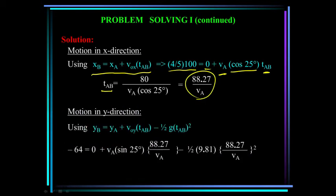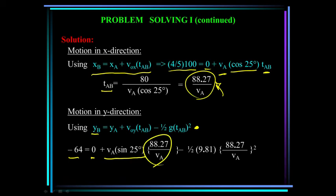Now for motion in the y direction: we take the constant acceleration equation and plug in known values. Y at b is minus 64, equal to initial y of 0, plus the initial y velocity times the time from a to b, minus one-half g times that time squared. Substituting the time expression from the x equation and solving for the initial velocity gives 19.42 meters per second.